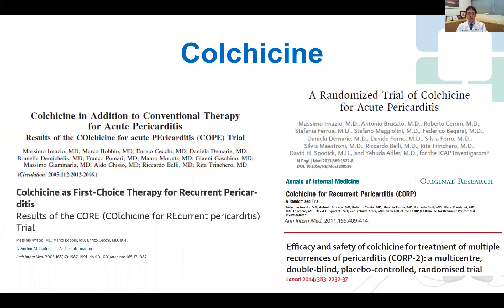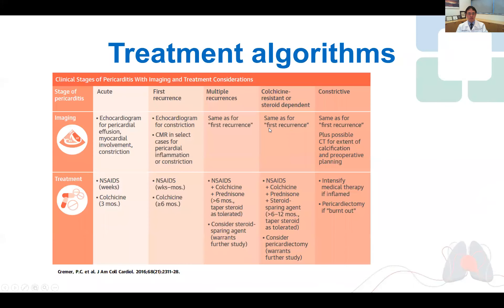Firstly, just to remind ourselves that colchicine has been shown in multiple randomized controlled trials to reduce the recurrent rate of pericarditis, including when added to NSAIDs. Therefore, in the current algorithm for the treatment of pericarditis, colchicine for three or six months in addition to NSAIDs are first-line therapy for acute or first recurrence of pericarditis.